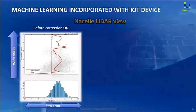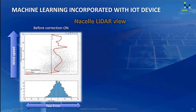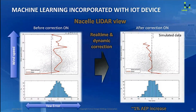This is the before and after correction. Before correction, this wind turbine has about a five-degree misalignment, and this misalignment angle is depending on wind speed. If we correct in real time, we are able to improve the alignment. This is simulated data, and in this case we are able to improve production by about 1%.